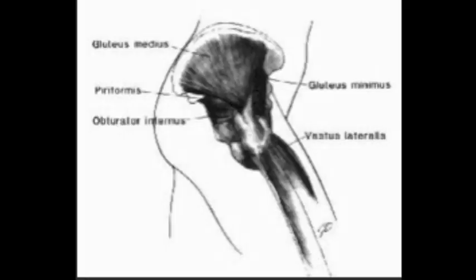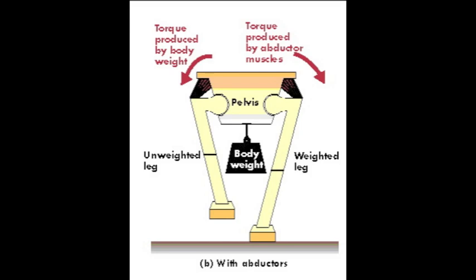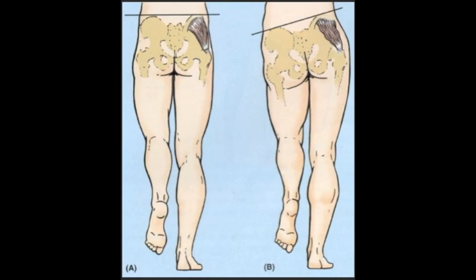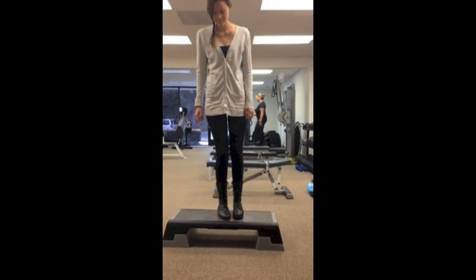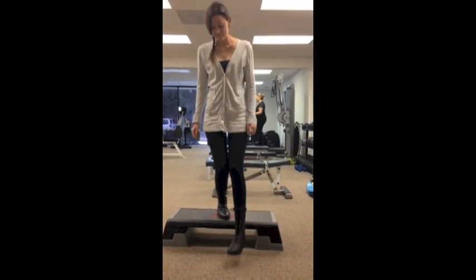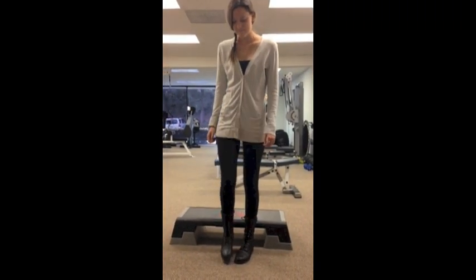The hip abductors have the job of maintaining the pelvis level when standing on one leg. Weak hip abductors lead to a pelvic drop on the opposite side, which leads to the femur being more angled towards the midline, placing the knee in a vulnerable position.